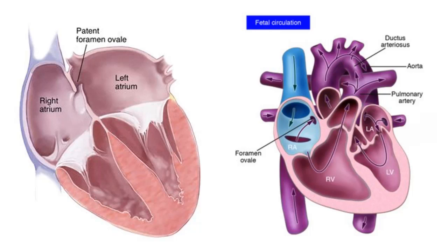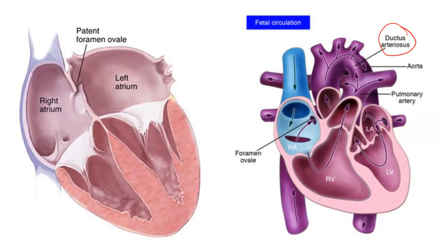There are two bypasses in the fetal heart. Since blood is oxygenated by the placenta, not all blood needs to go to the lungs. The foramen ovale allows blood to go straight from the right atrium to the left atrium. The ductus arteriosus connects the pulmonary artery to the aorta, diverting blood away from the lungs. Both bypasses close after the baby is born.